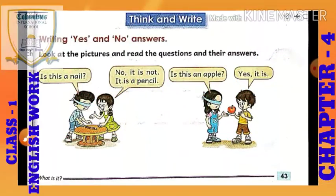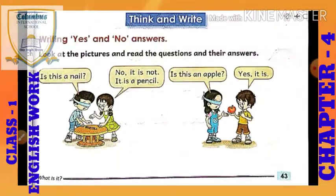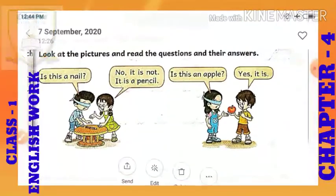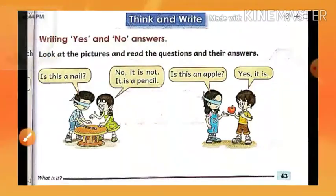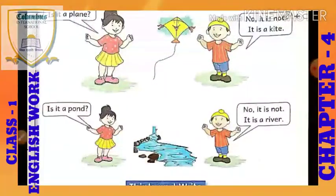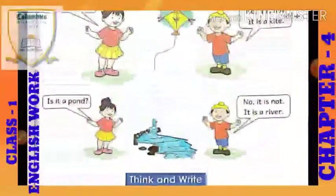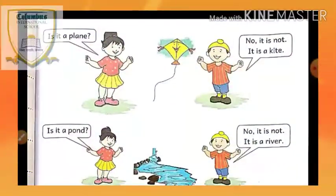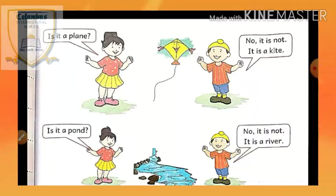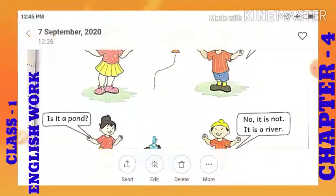In this exercise we have learned how to ask questions and how to give answers. If someone asks you short questions about yes or no, we should give our response in yes or no. Today we have read page number 42 and 43. You have to try to complete the exercises on page number 44 in your book. Read these topics again at home, understand them, and then try the next exercises. Thank you, have a nice day.